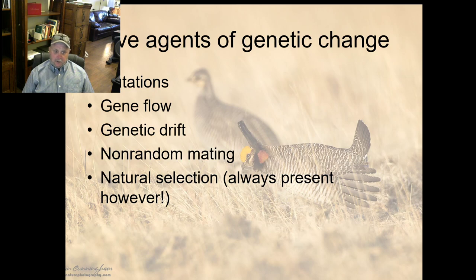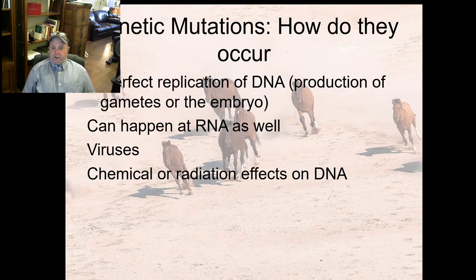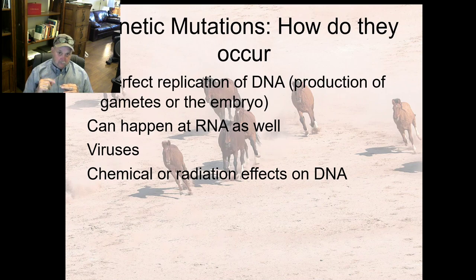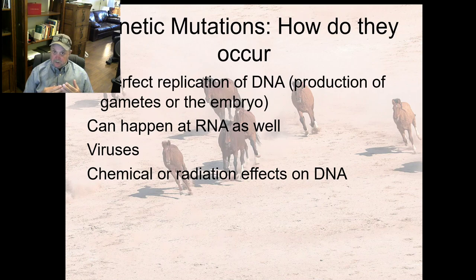Ways of genetic change are mutations, gene flow, genetic drift, non-random mating, and natural selection — which is always present. Let's talk about genetic mutations. There's an enzyme called polymerase, and every time your cells split, DNA replication occurs. It's almost perfect — there's a mistake only one in one billion times that DNA is replicated. But if you have three trillion cells, that adds up to a lot of mistakes. So you have cells in your body with definite mutations. If those mutations happen to be in your gametes or sperm cells, you will possibly pass that on to the next generation — and that mutation may be good, bad, or have no effect at all.